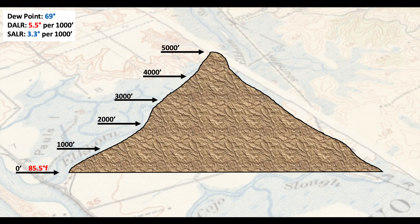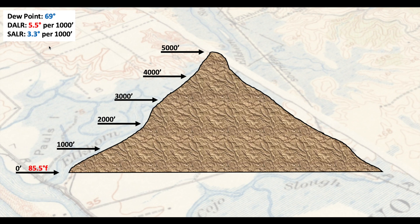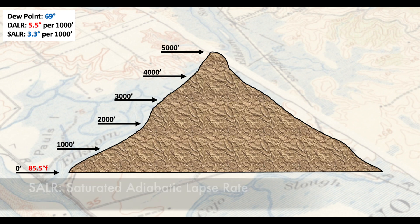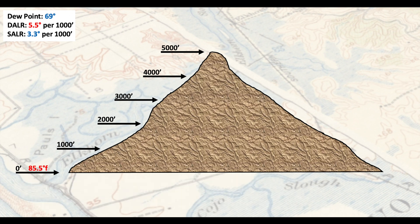We also have two values: the DALR, which is the dry adiabatic lapse rate — used for dry parcels of air — and the SALR, which is the saturated adiabatic lapse rate. The big difference between the two is the amount of water vapor available within that parcel of air.